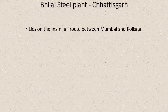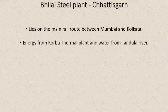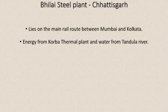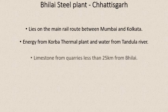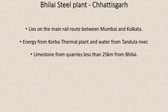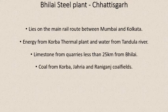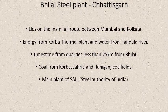The Bhilai Steel Plant lies on the main route between Mumbai and Kolkata — that is the transport point. Energy from the Korba thermal plant and water from the Sheonath river. Limestone from Nandini, less than 25 km from Bhilai, covers raw materials. Coal from Korba mines, Jharia, and Raniganj coalfields. This is the main plant under SAIL — Steel Authority of India Limited. Remember: Bhilai Steel Plant is the one that falls under SAIL.